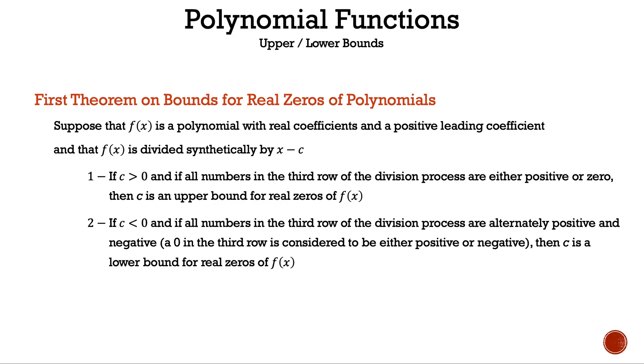Statement 2: If c < 0 and if all numbers in the third row of the division process are alternately positive and negative (a 0 in the third row is considered to be either positive or negative), then c is a lower bound for real zeros of f(x).